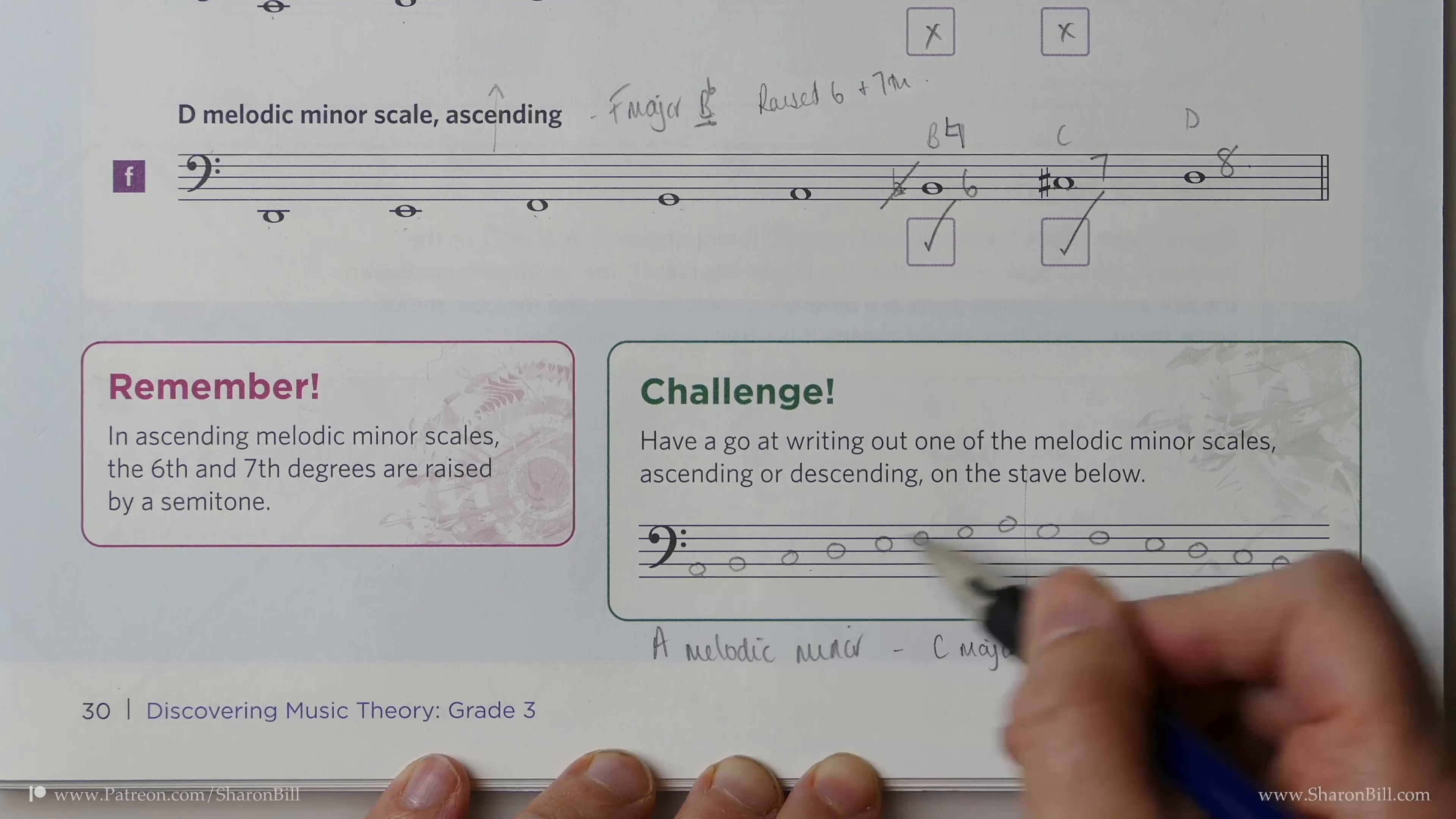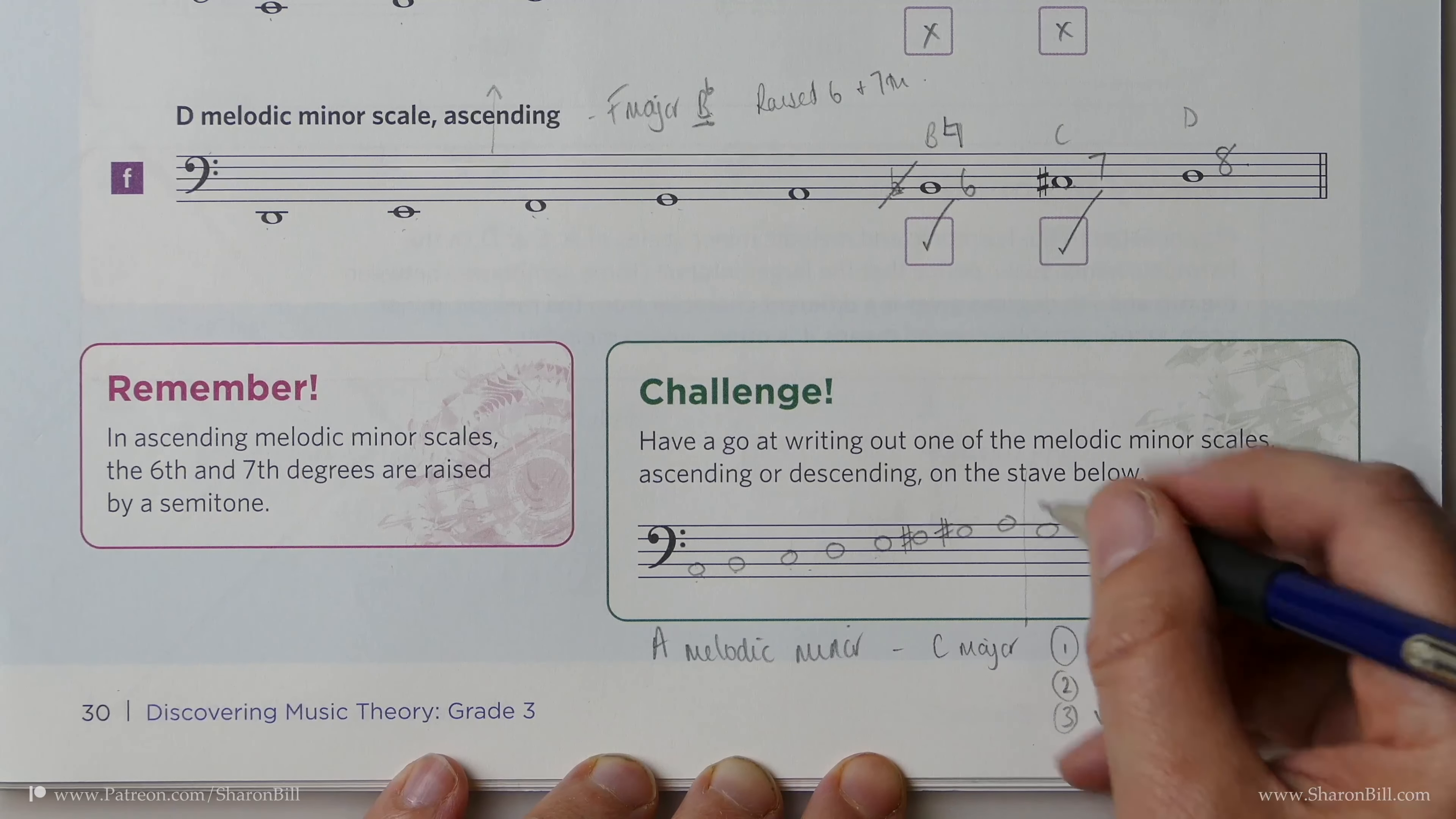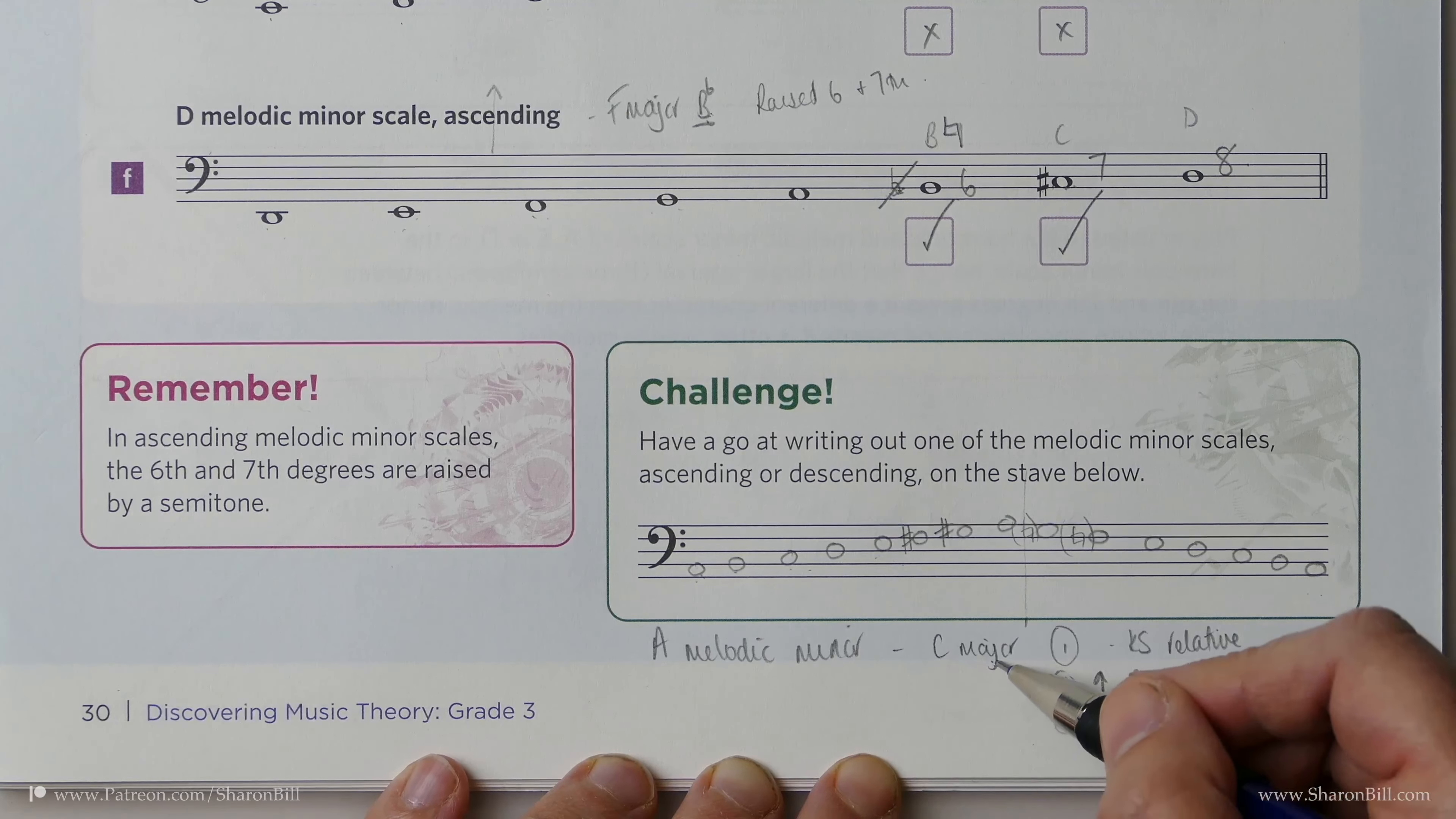And so we have a key signature of nothing, but then I need to raise the sixth and seventh: one, two, three, four, five, six is F sharp, seven is G sharp. And then coming back down, it would be G natural and F natural, so they now are no longer raised. We're just coming down in the key of C major.